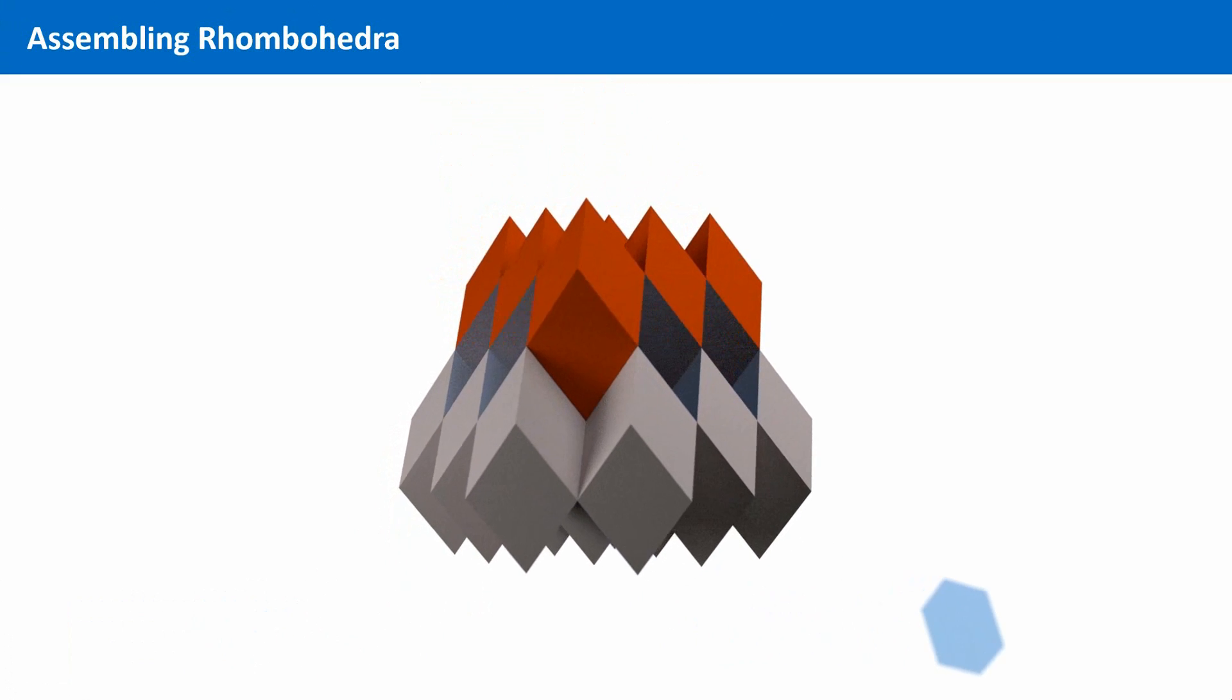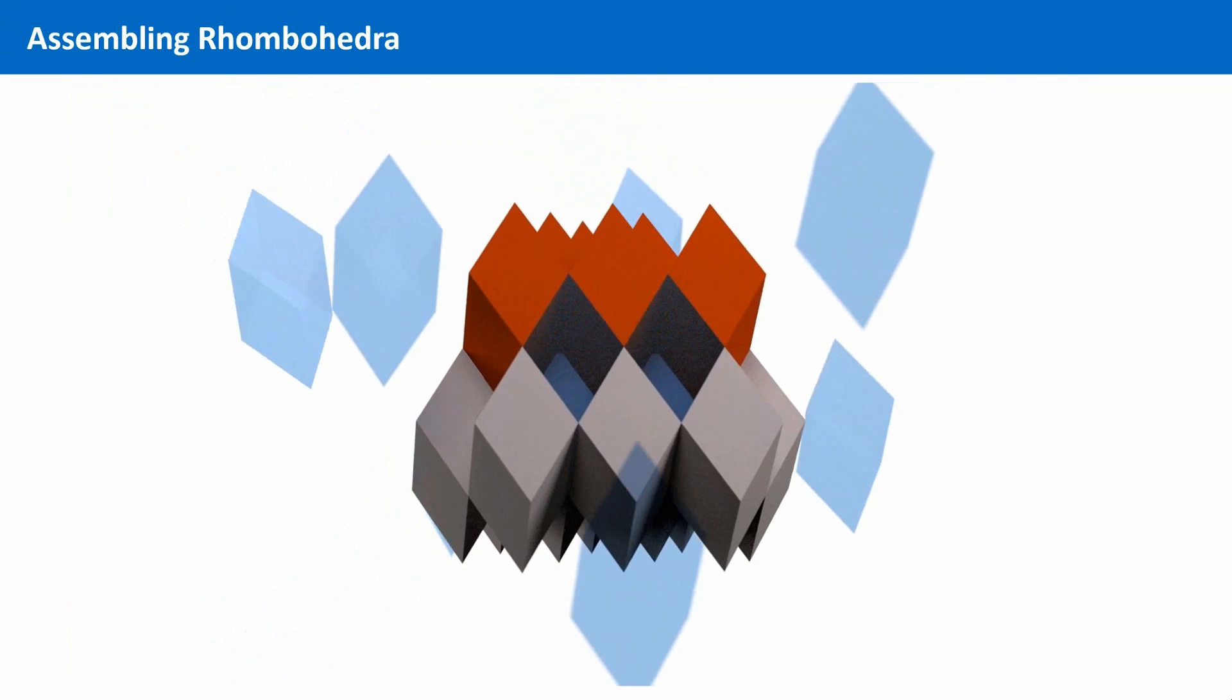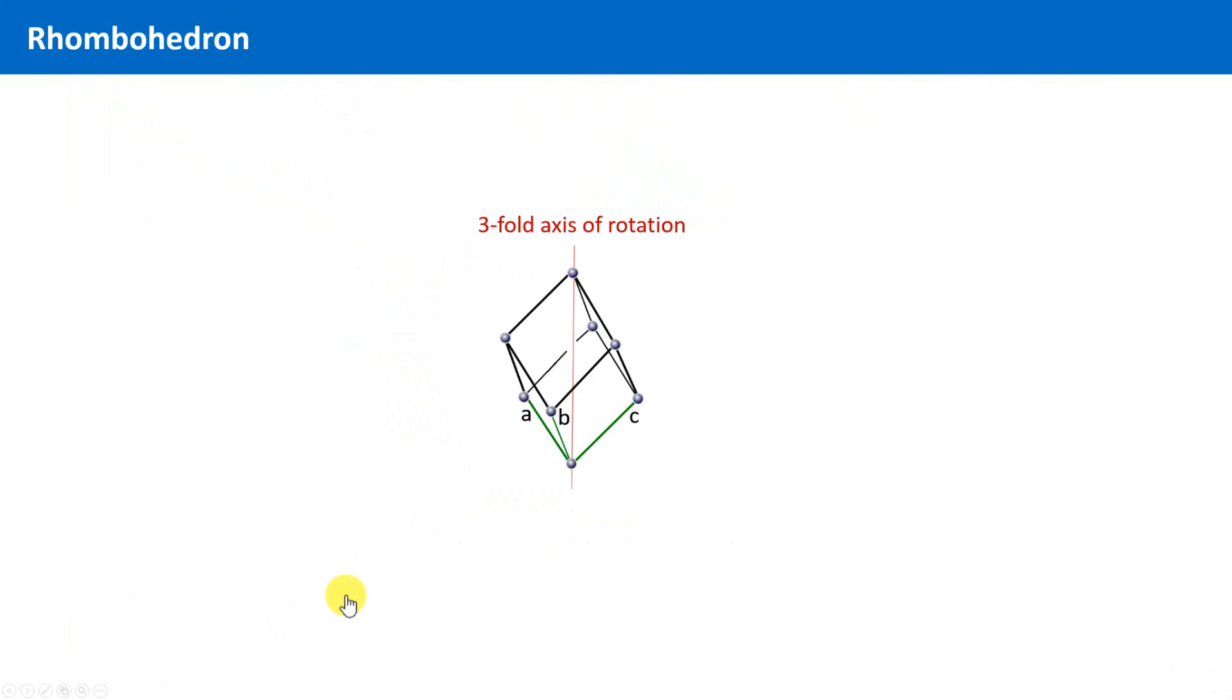However, there is one problem with such a rhombohedron, and this is the fact that any of these three axes, any of the lattice vectors are not identical with the direction of its threefold axis of rotation, which is the body diagonal.